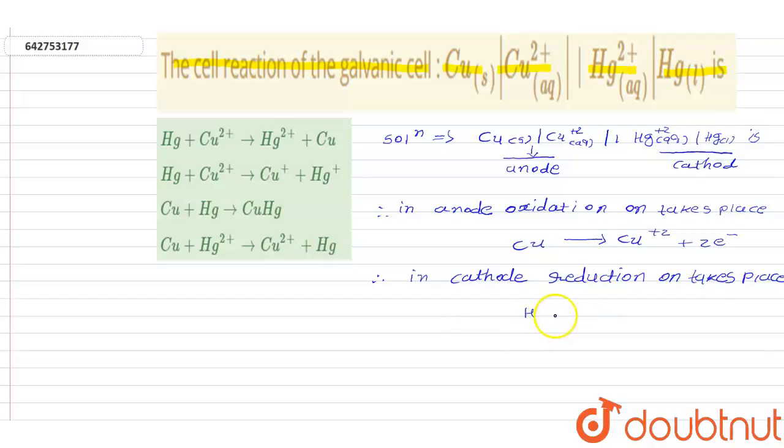So here, Hg plus 2 plus 2E minus is Hg. So here, reduction process.